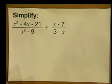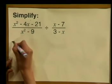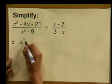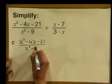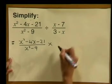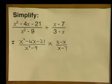Now let's move on to the next example. Simplify X squared minus 4X minus 21, all divided by X squared minus 9, divided by X squared minus 9 divided by X minus 7, all divided by 3 minus X. What is the first thing we do here? Here is our division sign, so let's begin with the flip over and multiply rule. We write X squared minus 4X minus 21 all divided by X squared minus 9, then a multiplication sign, and flip it over to write 3 minus X divided by X minus 7.